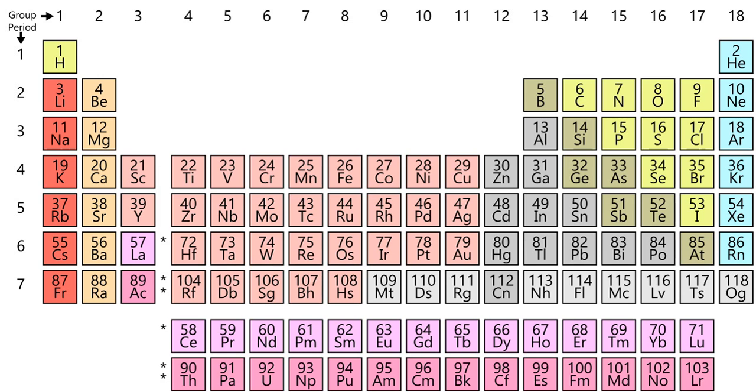Groups may be identified by their topmost element or have a specific name. For example, group 16 is variously described as the oxygen group and as the chalcogens.